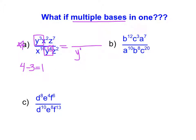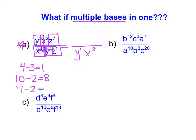Then I'm going to focus on the x's. I notice that I have x to the power of 2 in my numerator and x to the power of 10 in my denominator. So 10 minus 2 equals 8, leaving me with x to the power of 8, and because there were more x's in my denominator to start, this x to the power of 8 remains in my denominator. Then for the z's, I have 7 z's in my numerator and 2 z's in my denominator, which leaves me with z to the power of 5. Because I have more z's in my numerator to start, I'm going to have z to the power of 5 in my numerator.